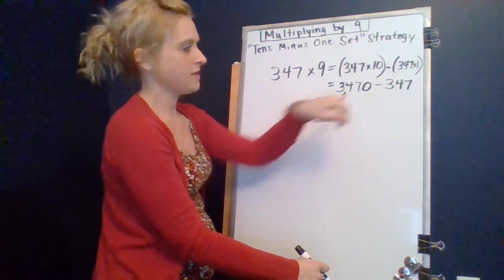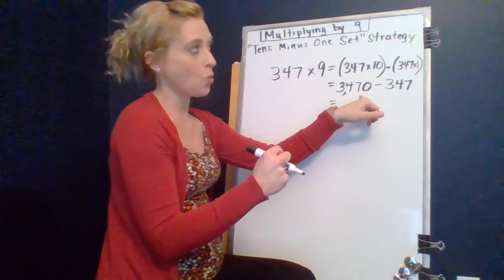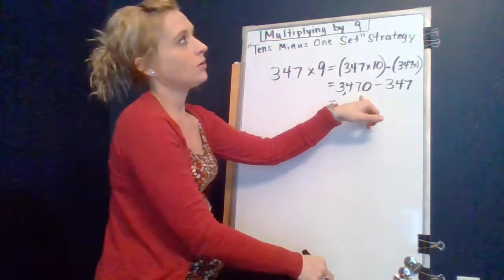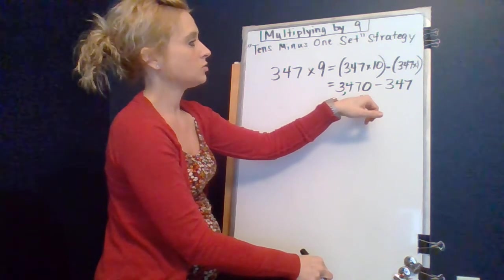So, what would be a quick, I think I'm going to remove 40 first. That would get me down to 30. Then I need to remove seven ones. So that would get me to, what was that? 23.